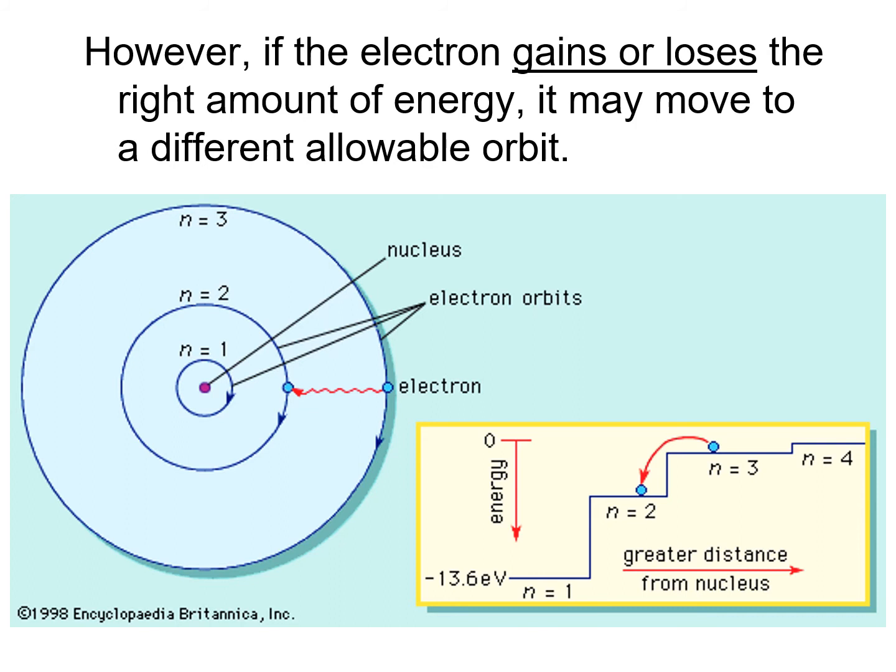However, if an electron gains or loses the right amount of energy, it can move to a different allowable orbit. Now, the way that an electron might gain energy is by being struck by some form of electromagnetic radiation. For example, light. So, if a light wave is intercepted by an electron, it can move to a higher allowable orbit for that particular atom.